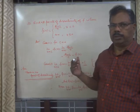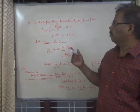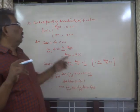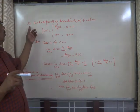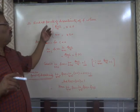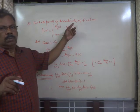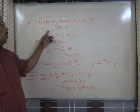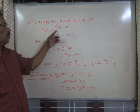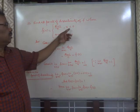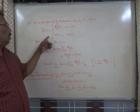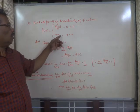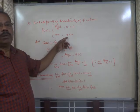We discuss question 23. In your book, find all points of discontinuity of the function f defined as: f(x) = sin(x)/x when x is less than 0, and f(x) = x + 1 when x is greater than or equal to 0.